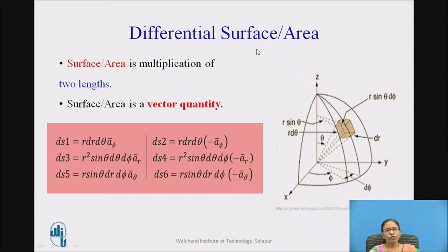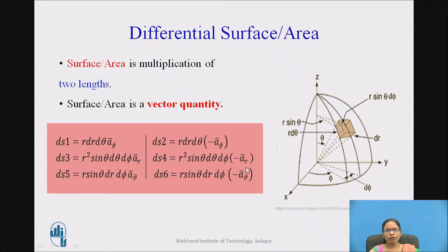We can also write the differential surface or area, which is the multiplication of two lengths. If I multiply dr and r·dθ, the leftover unit vector is āφ, so dS₁ = r·dθ·dr·āφ, and the opposite side is −āφ. When I multiply r·dθ and r·sinθ·dφ, I get r²·sinθ·dθ·dφ, with unit vector ār (and −ār for the opposite side). If I multiply dr and r·sinθ·dφ, I get r·sinθ·dr·dφ with unit vector āθ (and −āθ for the opposite side).